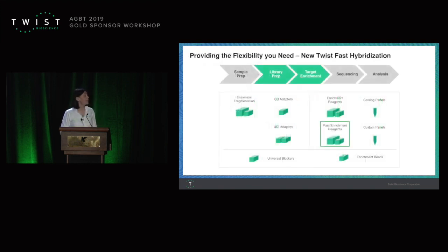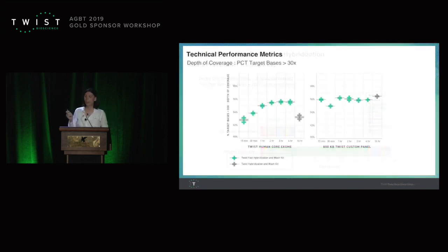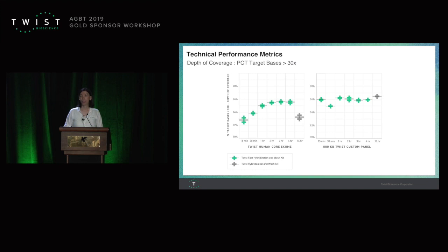The next thing we're adding is fast hybridization reagents. In the past, we used a 16-hour hybridization to get maximum efficiency. Now we are changing the buffers, and you can achieve the same results in 15 minutes, so that you can go from a sample to a sequencer in the same day. On the left, we have exome data — you can see that 16-hour hybridization is as good as 15 minutes with the new buffer. If you wait 30 minutes or one hour, it gets even better, but you get the same performance at 15 minutes as you used to get at 16 hours. The left is a big panel, the right is a very small panel — it works both ways, with very high on-target rate and very high percentage of bases covered.